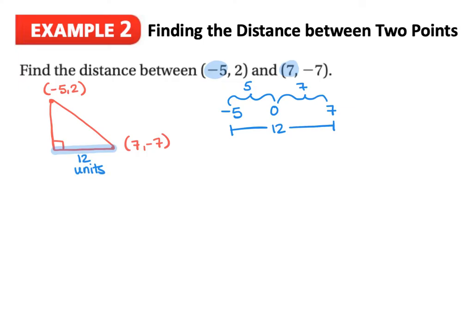Now taking a look at our y-coordinates, I've got 2 and negative 7. Using that same strategy: the distance between negative 7 and 0 is 7 (the absolute value), and the distance between 0 and 2 is 2. So the distance between them is 7 plus 2, which is 9. My vertical distance is going to be 9 units.